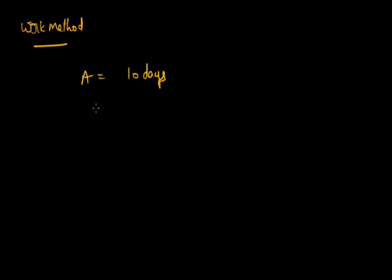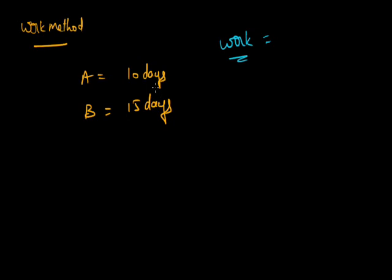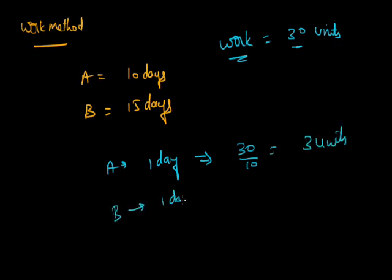The second way is the total work method. Same problem: A can do the piece of work in 10 days, B in 15 days. Let us assume the total work. We take the LCM of 10 and 15, which is 30, so total work is 30 units. A completes it in 10 days, so A's one day work is 30/10 = 3 units. Similarly, B's one day work is 30/15 = 2 units. So B does 2 units per day and A does 3 units per day.